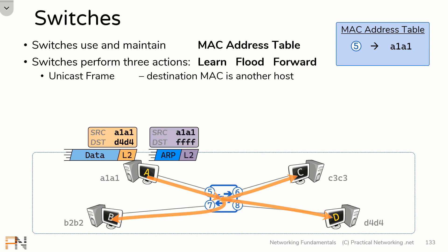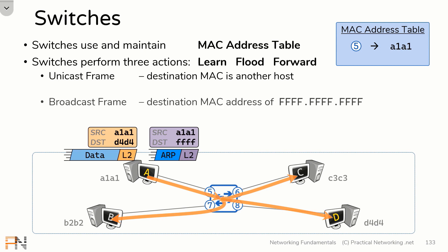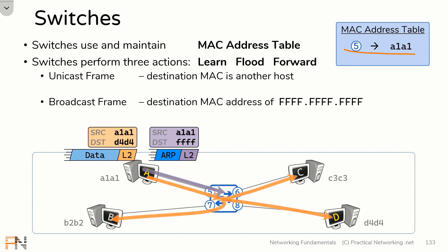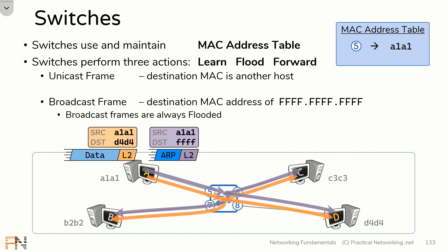But what if instead host A had sent a broadcast? For instance, what if host A had sent an ARP request? An ARP request is a broadcast frame, meaning it has a destination MAC address of all F's. This is a specially reserved MAC address which indicates that this content needs to be delivered to everybody on the local network. If this frame was the first frame that host A had sent, the learning process would have been identical — the switch would have received port 5 with a source MAC address of A181. But since this is a broadcast frame, the switch wouldn't even look at its MAC address table in order to forward this frame. A broadcast frame is always going to be flooded by a switch.